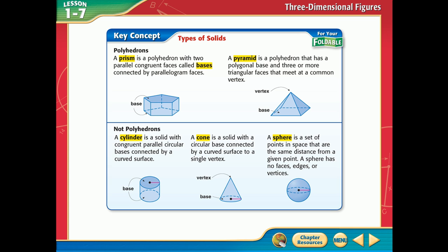Look at the cylinder — it says 'not polyhedrons.' A cylinder's bottom and top are the same, very similar to a prism. But look at the base — it's not straight edges, it's a circle. The base of this thing is a circle, so that's why we give it a different name: cylinder. The top and bottom are still the same, and the sides go straight up.